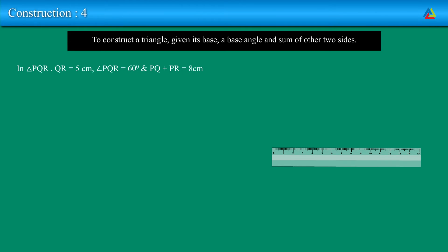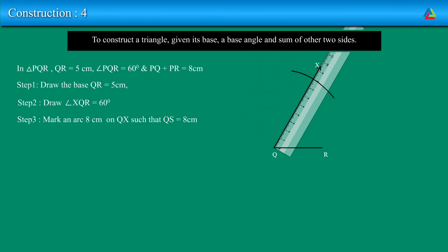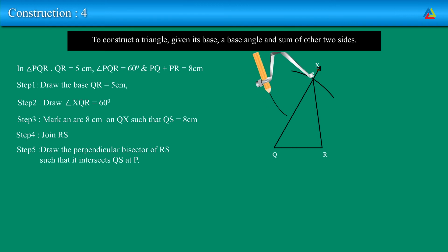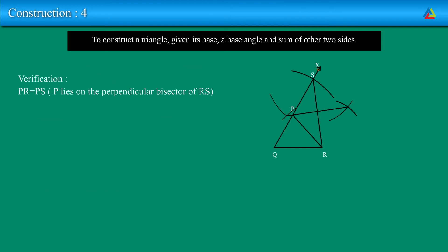Construct a triangle PQR such that QR is equal to 5 cm, angle PQR is equal to 60 degrees, and PQ plus PR equals 8 cm. Step 1: draw the base QR equal to 5 cm. Step 2: draw angle XQR equal to 60 degrees. Step 3: mark an arc 8 cm on QX such that QS is equal to 8 cm. Step 4: join RS. Step 5: draw the perpendicular bisector of RS such that it intersects QS at P. Finally, join PR. Thus, triangle PQR is the required triangle. Since P lies on the perpendicular bisector of RS, PR equals PS, and PQ equals QS minus PS.